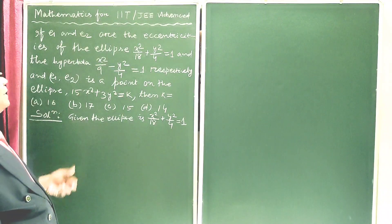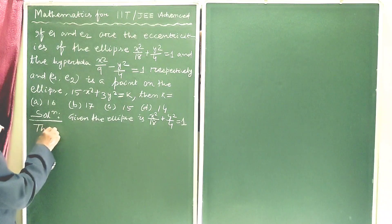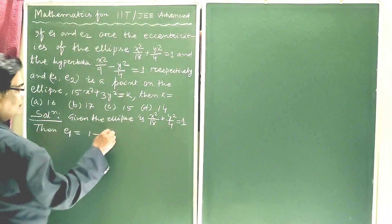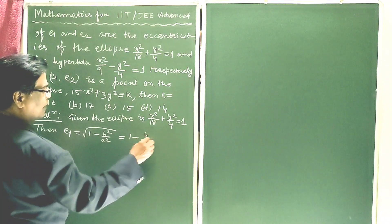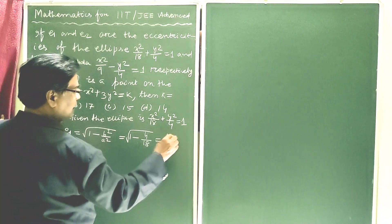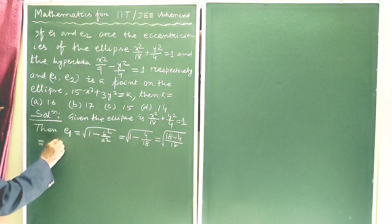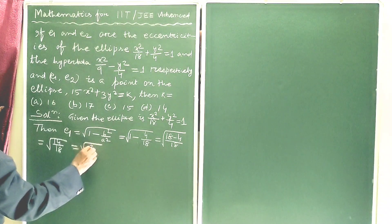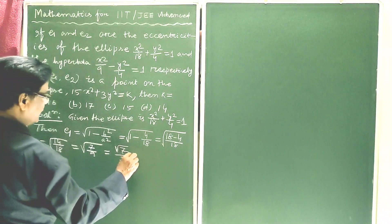Given the ellipse x² / 18 + y² / 4 = 1, then E1, the eccentricity of the ellipse, is equal to √(1 − b² / a²). This is √(1 − 4/18) = √(14/18) = √(7/9) = √7 / 3. This is equation 1.